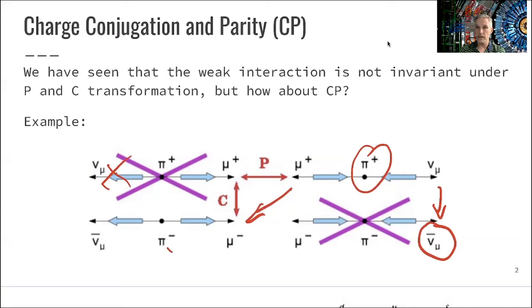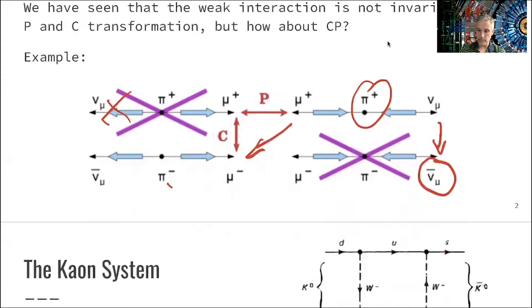Good. So we saved the day. It seems like the weak interaction is invariant under CP transformation. However, that's not quite true.